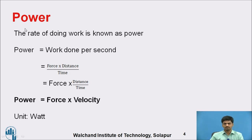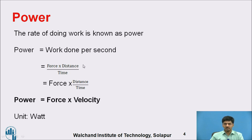What do you mean by power? The rate of doing work is known as power — that is, work done per second. For example, a person transferring material from one place to another requires force and distance, and the transfer takes some time. So power is the rate of doing work, mathematically force × distance ÷ time. Separating distance ÷ time gives velocity, so power = force × velocity. The unit of power is Watt.